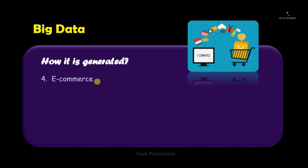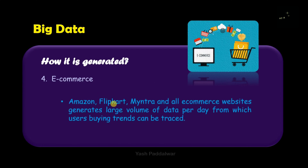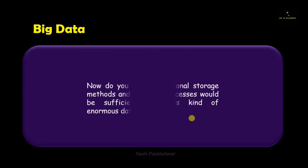The fourth example is e-commerce, which is becoming an integral part of our lives. Amazon, Flipkart, Myntra, and other e-commerce websites generate large amounts of data per day, from which users' buying trends can be traced. If a particular product is searched by a user, a recommendation advertisement will appear on other sites — you may have noticed this. This is done with the help of big data: data is stored, analyzed, and processed to generate recommendations and reports that benefit the organization.